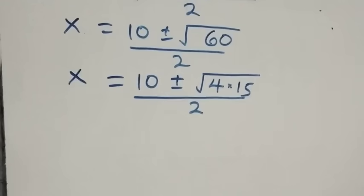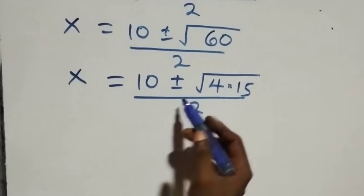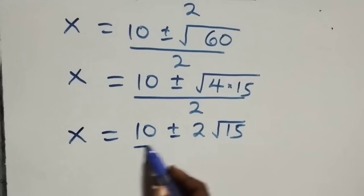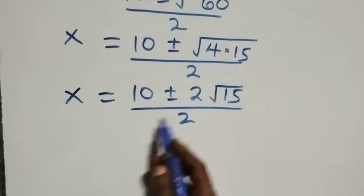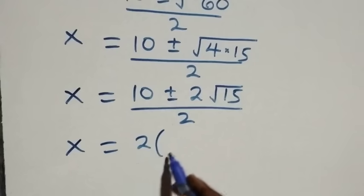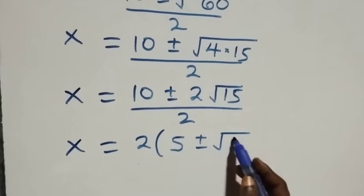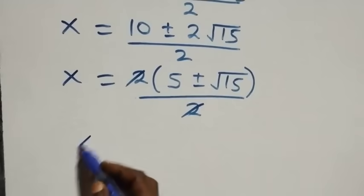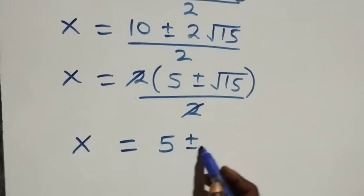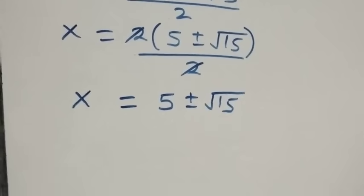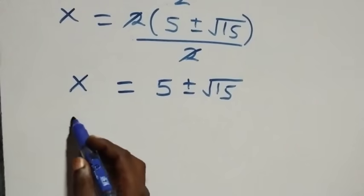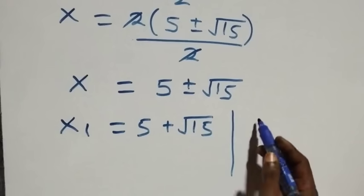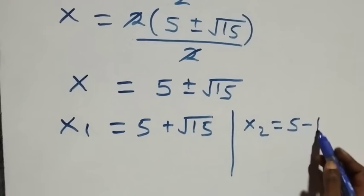We separate into two roots: root 4 equals 2, so we take it out. This gives x equals 10 plus or minus 2 root 15, over 2. Since 2 is common, we write x equals 2(5 plus or minus root 15) over 2. The 2s cancel, giving x equals 5 plus or minus root 15. So x₁ equals 5 plus root 15, and x₂ equals 5 minus root 15.